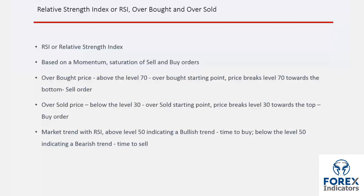A trader should wait for that moment to place a sell order. Oversold is the time when there is an abundance of sell orders on a symbol and a considerable number of traders are closing their sell orders. Oversold occurs when a trend in RSI passes level 30 towards the bottom. Whenever price crosses level 30 towards the top, a buy order would be beneficial.